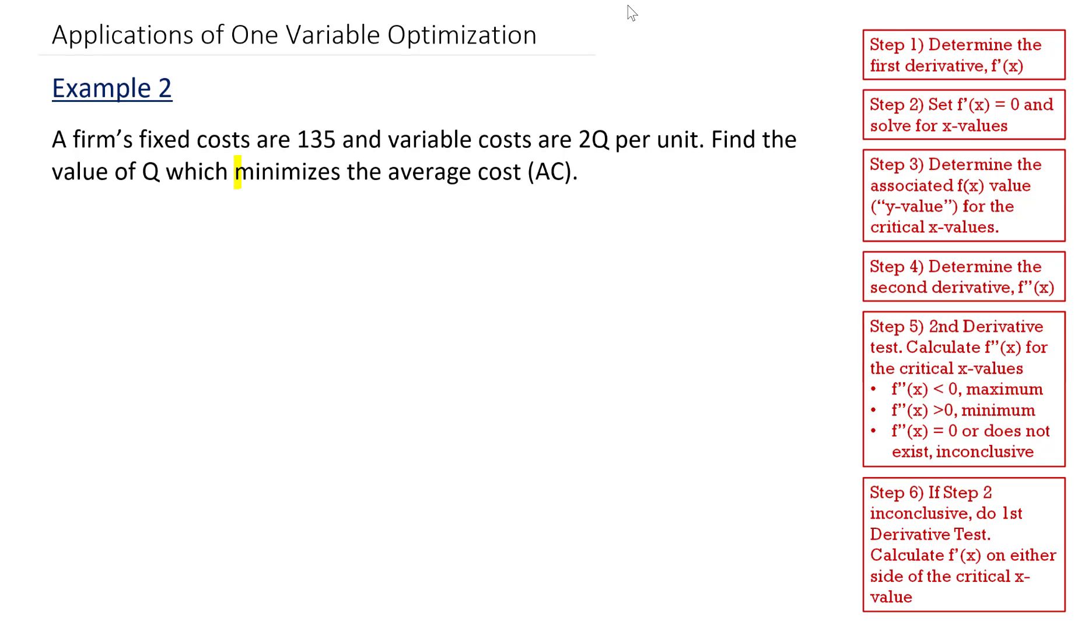So in this problem, we're trying to minimize the average cost. To start with, I'm going to need an average cost function. To get that, I'm going to look at my fixed costs and my variable costs and come up with a total cost equation.